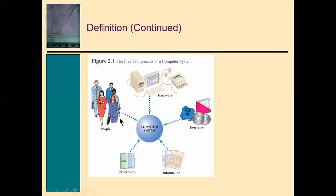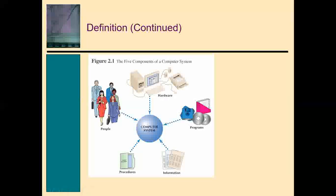Take note of the difference: the components of the computer itself are just two — hardware and programs. But if you say components of the computer system, three more are added: information, procedures, and people. Please take note of that difference between computer components and computer system components.